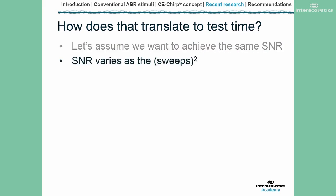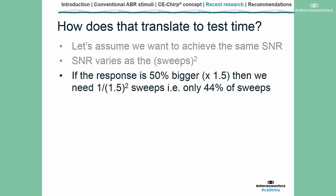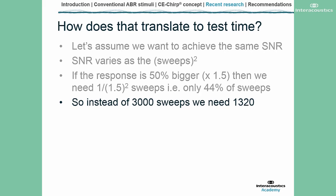If the response is 50% bigger — about 1.5 times as large as we've seen for 4kHz — then we need 1 over 1.5 squared number of sweeps to obtain the same signal-to-noise ratio as with tone pips. That's about 44% of the number of sweeps. If we collect 3,000 sweeps for tone pips, this would mean we would only need to collect 1,320 sweeps for chirps. This means we've more than halved the test time.